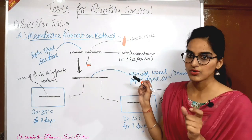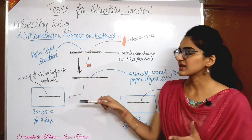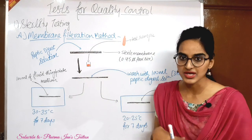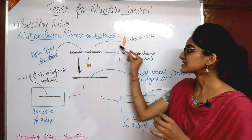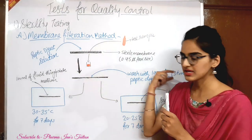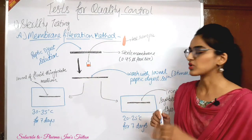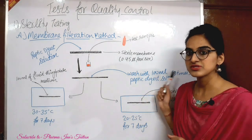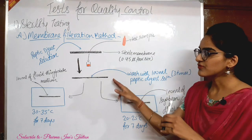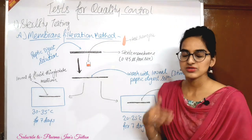The pore size will be very small — 0.45 microns. We then filter the test sample through the membrane and separate it. We wash the membrane with approximately 100 ml of peptic digest solution, then wash again with approximately 300 ml of peptic digest solution to remove any residual test sample.